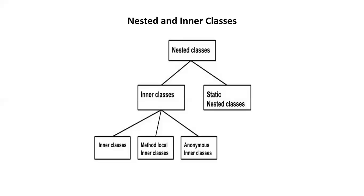An anonymous inner class is declared without any name at all. It is an inner class without a name and for which only a single object is created. Normally we declare a class, but anonymous classes are expressions — we define the anonymous class within another expression. Anonymous inner class is useful when we need to create an instance of an object with overridden methods of a class or interface without creating a subclass.